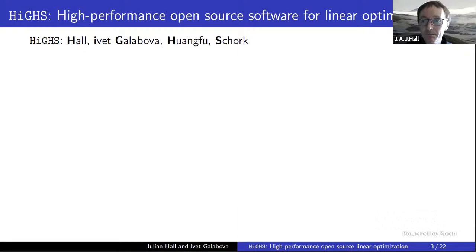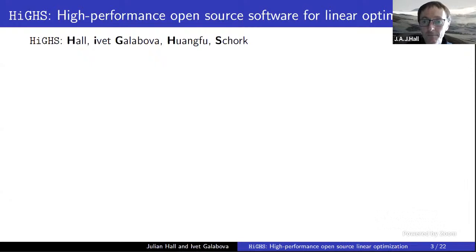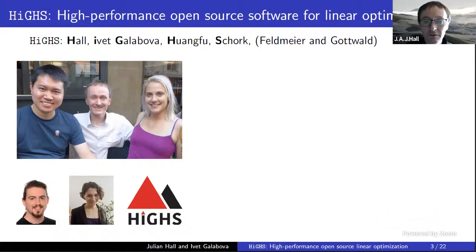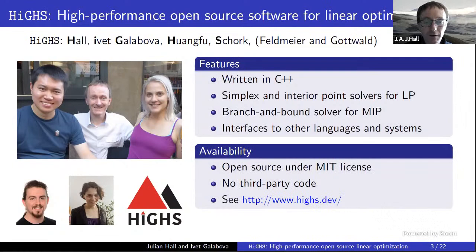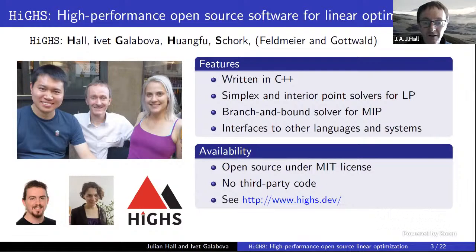So what is HiGHS? The acronym comes from the names of the people principally involved: myself, Ive, Ji Huangfu, and Lucas Schork. Two more people are involved now: Michael Feldmeyer, my middle PhD student, and Leona Gottwald from Germany. HiGHS is written in C++, has simplex and interior point solvers for linear programming, a branch-and-bound solver for mixed integer problems, and interfaces to other languages. It's available under the MIT license — the most permissive open source license — with no third-party code. Our aim is to build the world's leading open source linear optimization software.